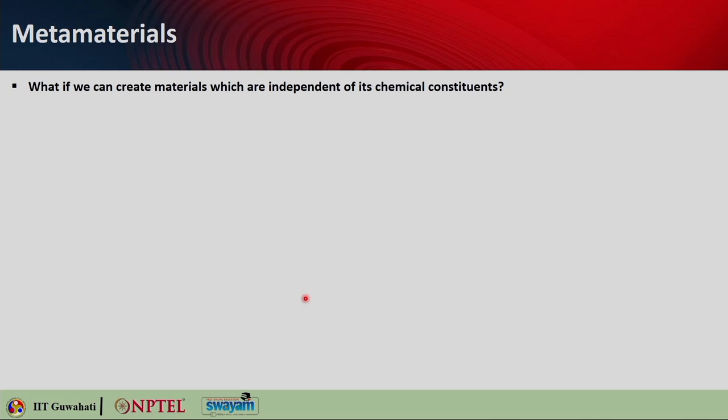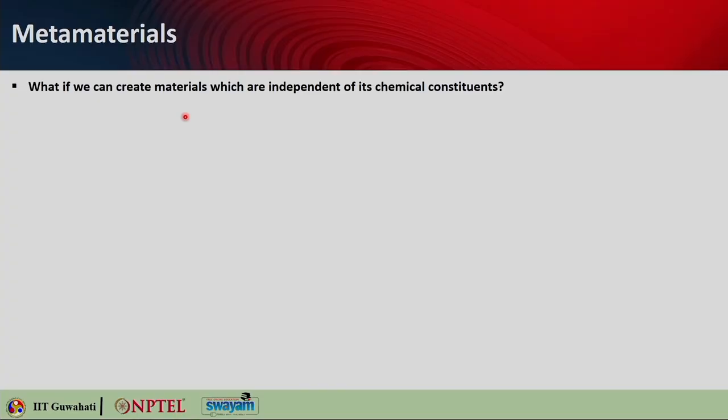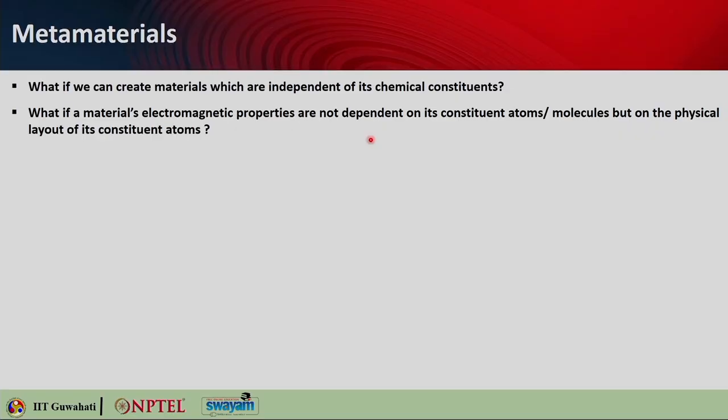That is what tempted people to look into metamaterials. These are materials we can create and design on our own, and their properties are independent of their chemical constituents — that gives a lot of opportunity. The electromagnetic properties of metamaterials are not dependent on their constituent atoms or molecules, but on the physical layout of the constituent atoms. The physical design defines the property of the material.